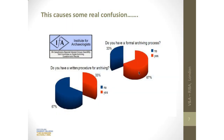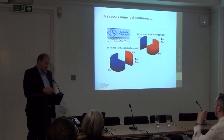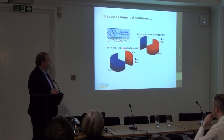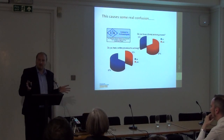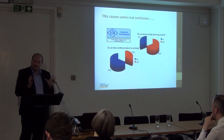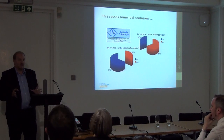This confusion is illustrated by a survey commissioned by the Institute of Archaeologists back in 2010, asking people about their archival processes. We were delighted to see that 67% of them had a formal archiving process. But when we asked whether they had a written procedure for archiving, 67% of them did not. So there's a genuine misunderstanding about what's actually going on.